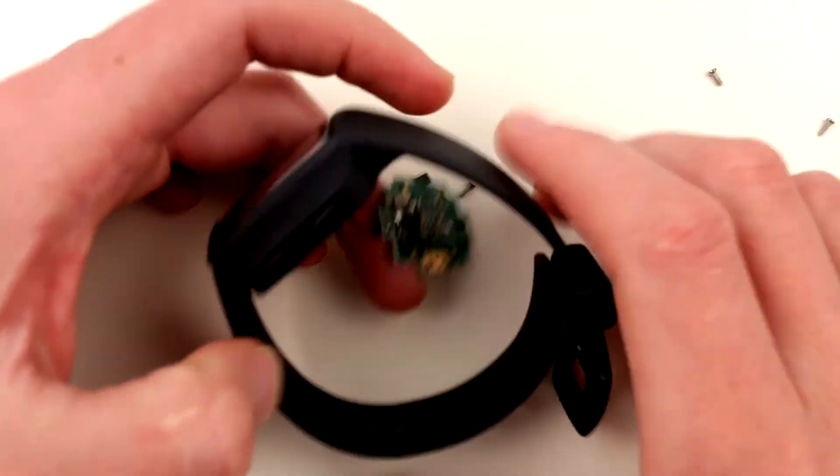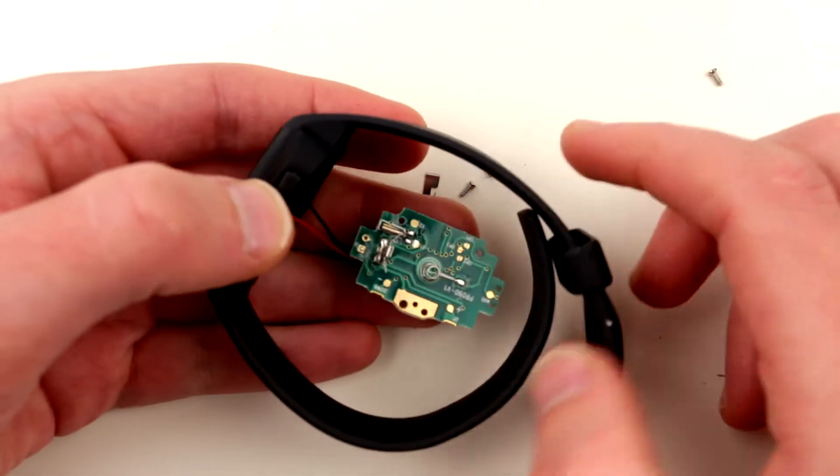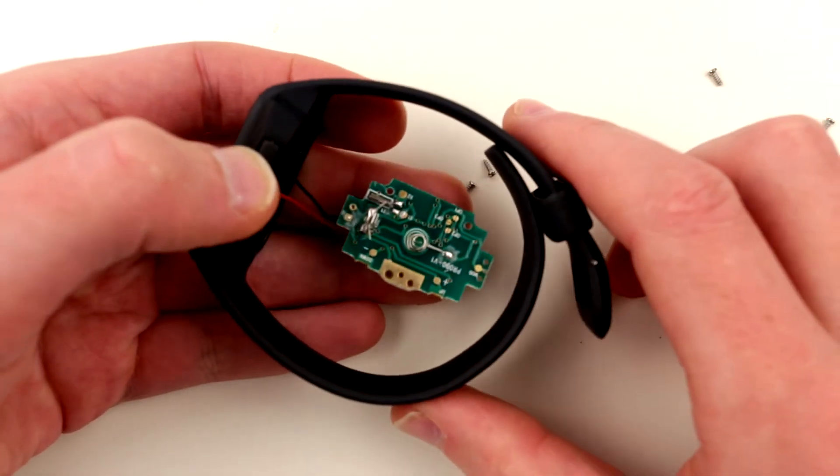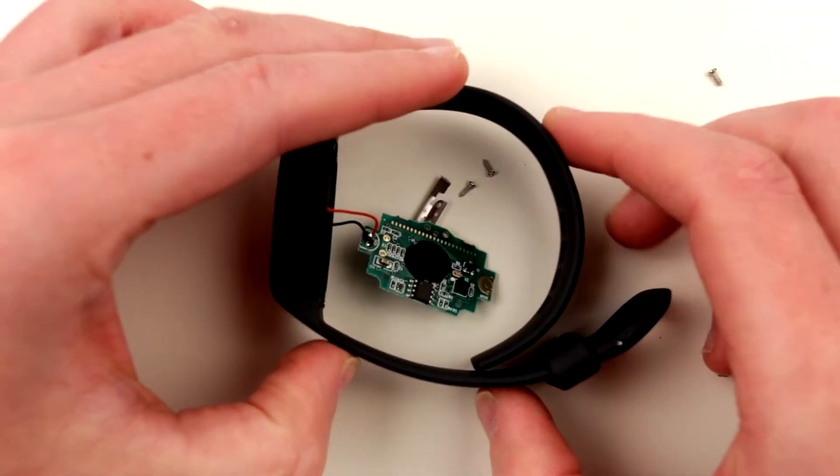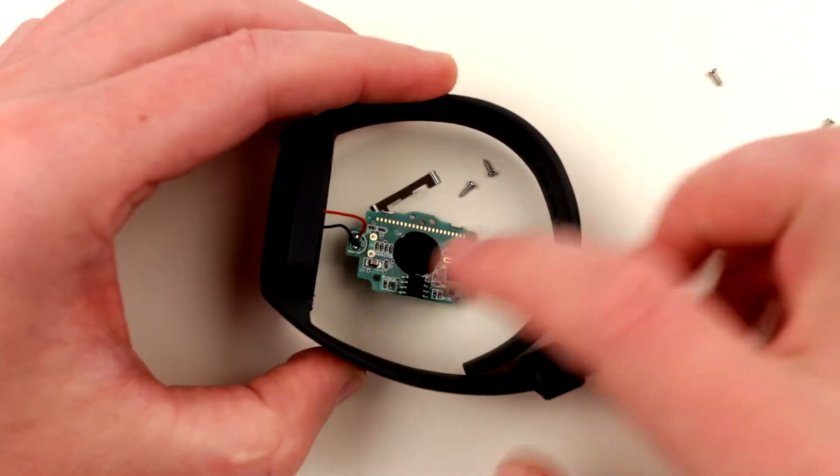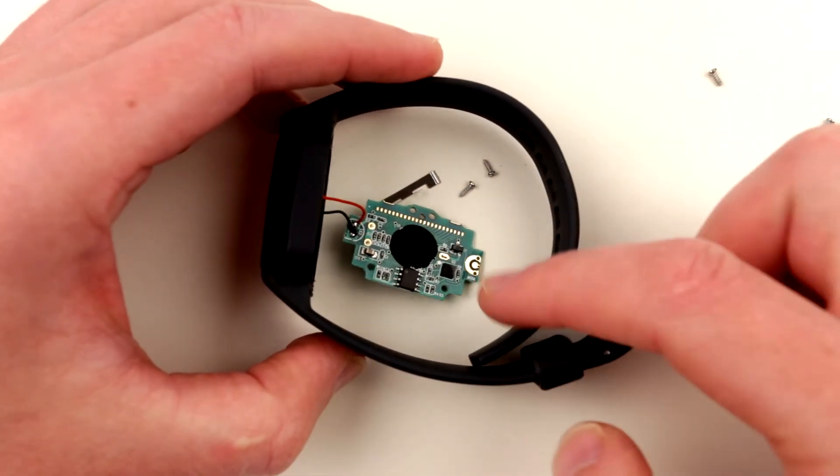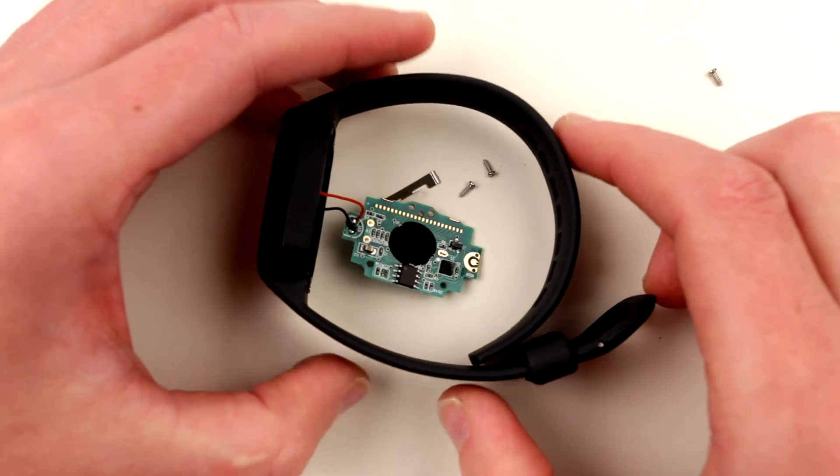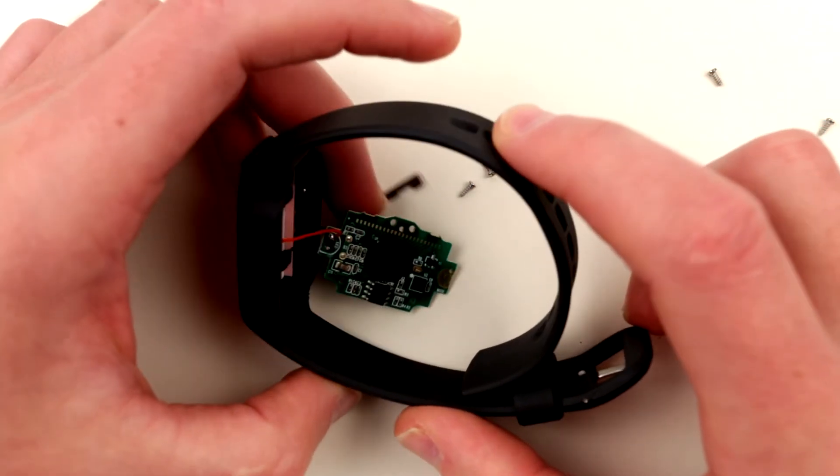The only thing it may also track is time of day, I guess, because this totally looks like a real-time clock over here, this little crystal. So potentially this thing has the ability to actually also track your calories per day and time of day and things like that. I believe this is pretty much it that this thing can possibly do.